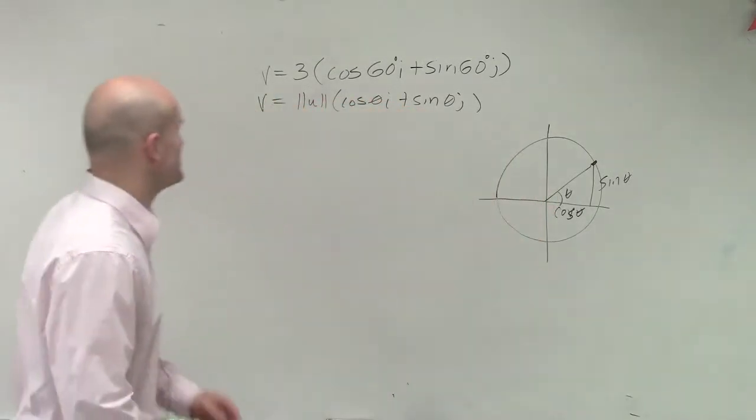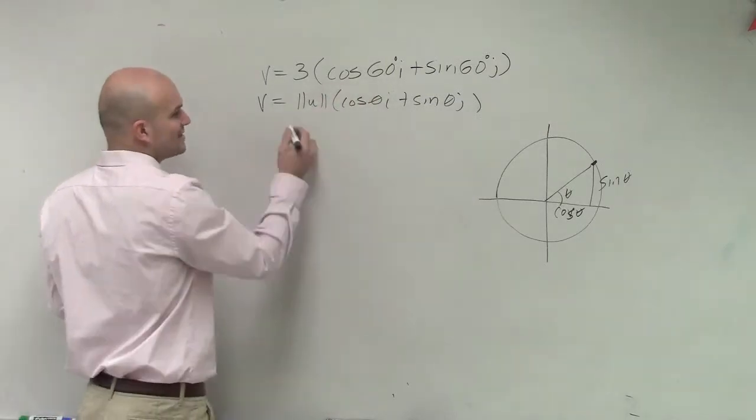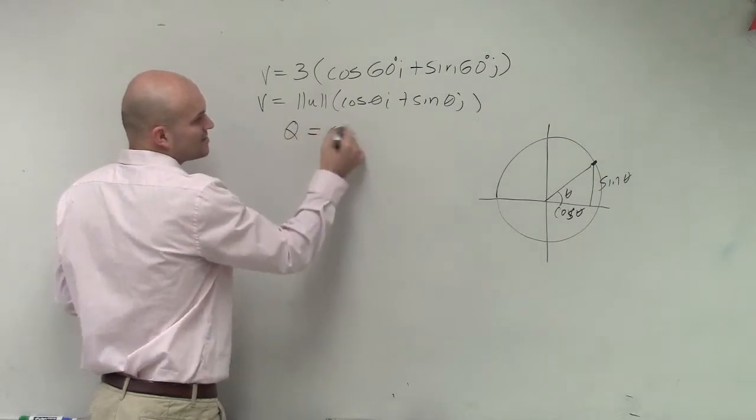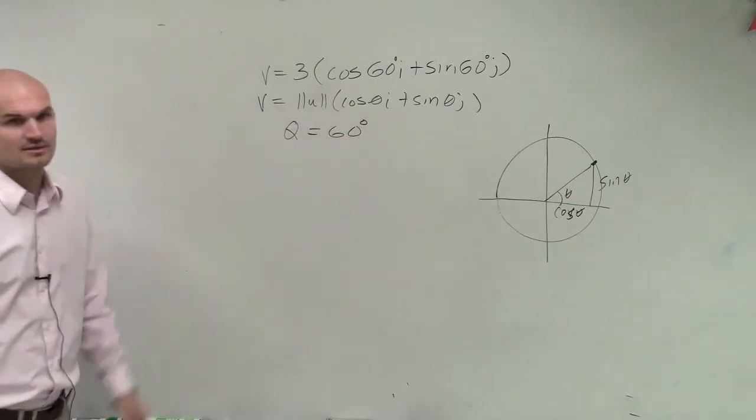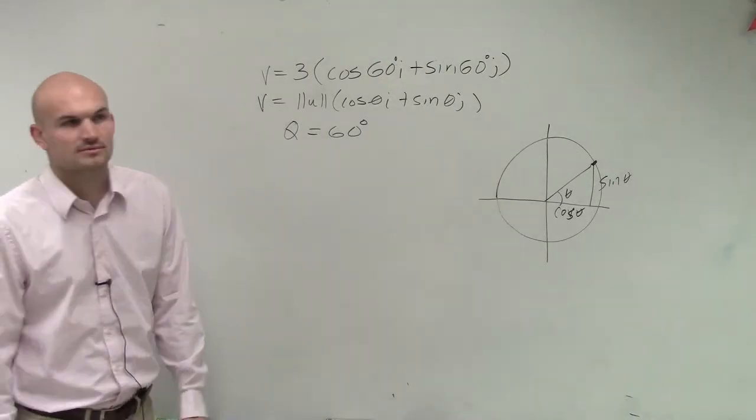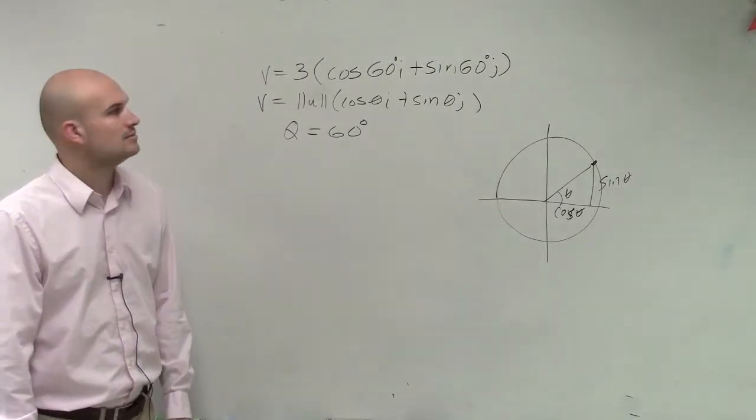So all we need to say for this is the angle we're dealing with in this problem, because they're asking us what's the angle and what's the magnitude? Theta equals 60 degrees. And then what's the magnitude? What scalar am I multiplying this by? 3.